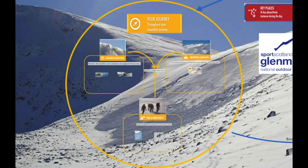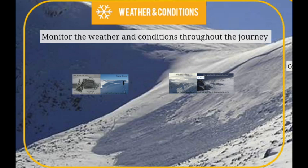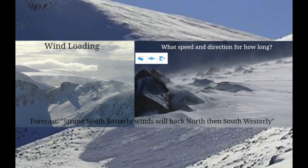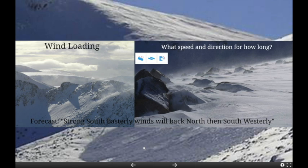Once we have our plan, we can go out on our journey. There we have to monitor what's happening with the conditions and whether everything is working out as forecast. For example, at the planning stage the avalanche forecast said there would be new snowfall, heaviest overnight and during the morning - has this turned out to be the case? Look out the window first thing in the morning. You might have to journey to the hill - what do you see? Does it match the forecast or not? Throughout the journey, we want to be monitoring the things that will have an influence on avalanche hazard as dictated by the forecast.